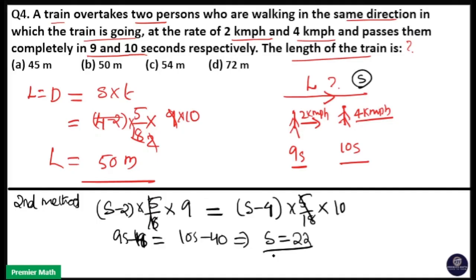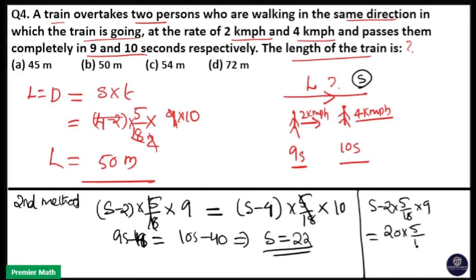Applying S equals 22 in the first equation: distance equals S minus 2 into 5 by 18 into 9. That is 20 into 5 by 18 into 9 — the 18 and 9 cancel to give 2, then 2 into 10 equals 20, so distance equals 50 meters. Therefore the length of the train is 50 meters.